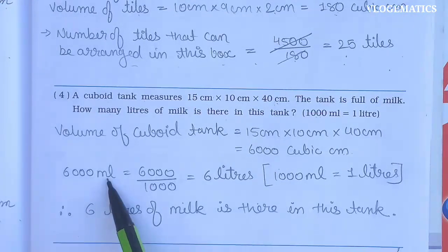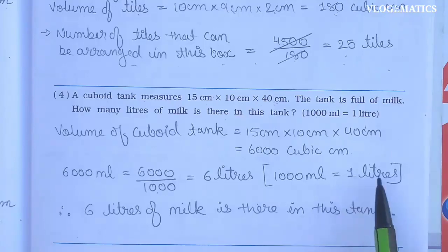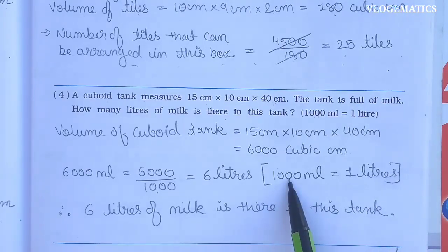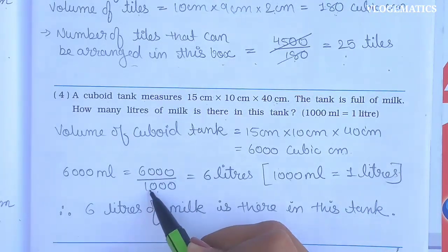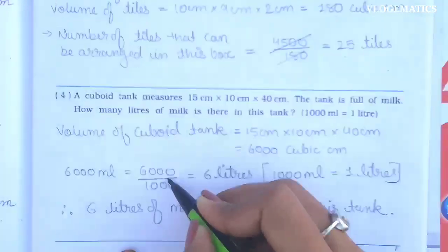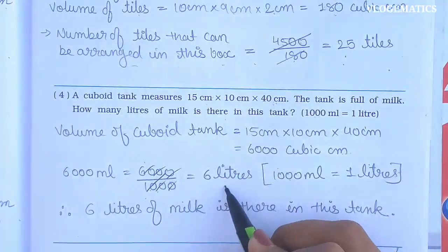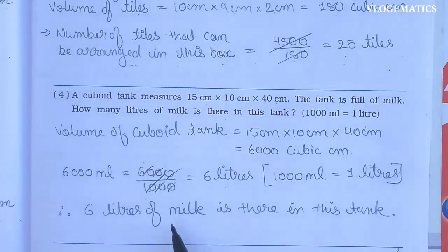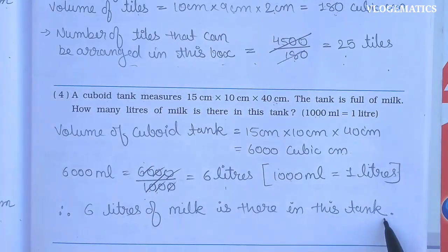Now we convert 6000 ml to liters: 6000 ÷ 1000 = 6 liters, because 1 liter = 1000 ml. We cancel the zeros: 6 ÷ 1 = 6 liters. Therefore, 6 liters of milk is there in this tank.